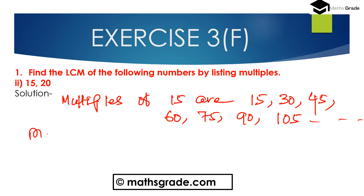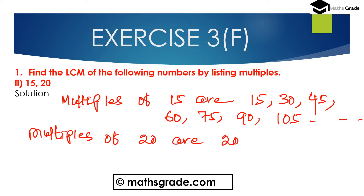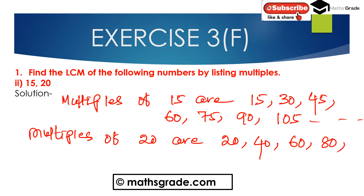Now multiples of 20 are: 20, 40, 60, 80, 100, 120, and so on. Here we have to find the common multiples between 15 and 20. There is no 15, there is no 30, there is no 40, but 60 appears in both lists. So the least common multiple of the numbers 15 and 20 is 60.